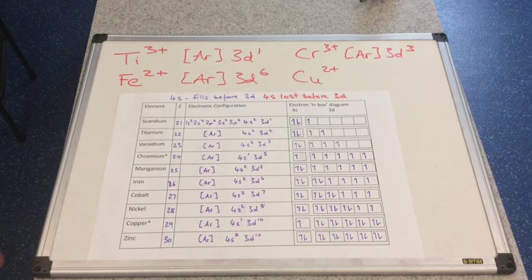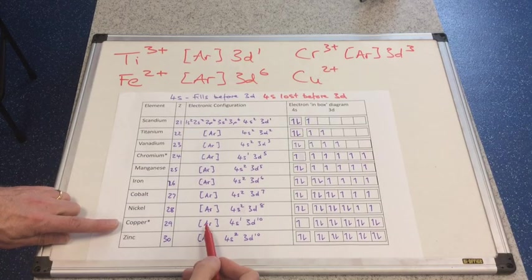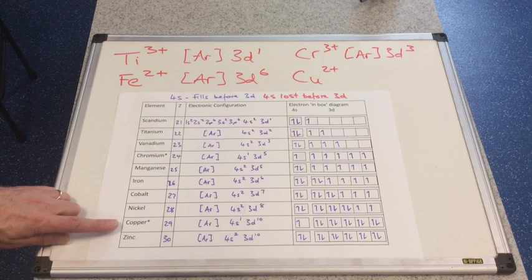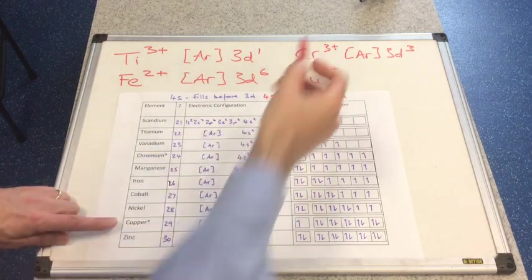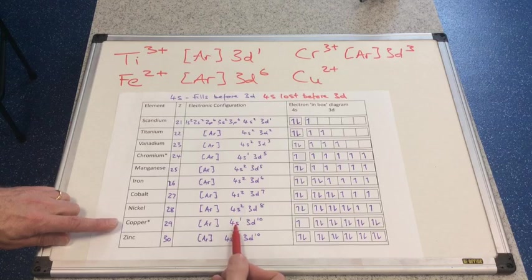And the last one of these, we'll do copper 2+. So there's the atom, argon 4s1, 3d10. We need to form a 2+ ion, so we need to lose two electrons. Remember that one will go first, so there's no 4s electrons. So it's argon 3d9.